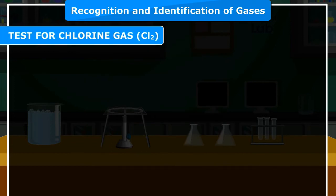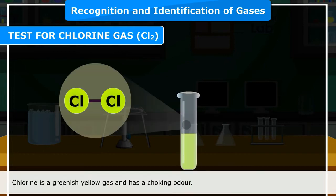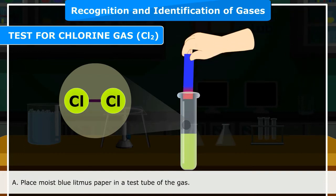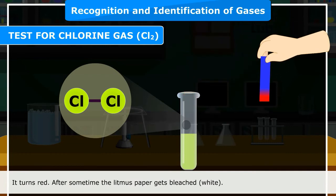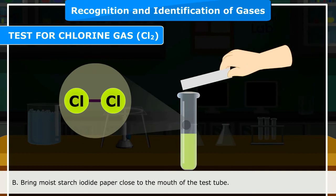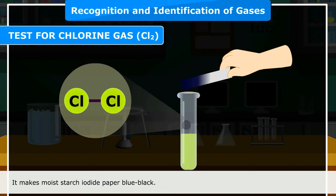Test for chlorine gas (Cl₂): Chlorine is a greenish-yellow gas with a choking odor. Confirmatory test A: Place moist blue litmus paper in a test tube of the gas — it turns red, then gets bleached white. The gas is acidic and has bleaching action. Confirmatory test B: Bring moist starch iodide paper close to the mouth of the test tube — it turns blue-black. This confirms that the gas is chlorine.